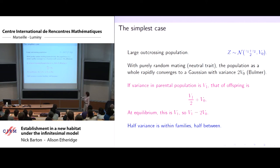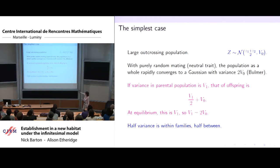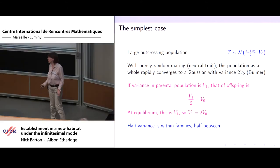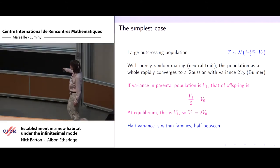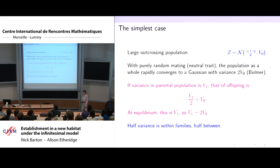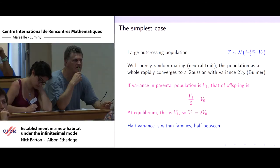You immediately see something interesting and perhaps surprising: across that population, half of the variance we're observing is actually within families, and half is between families. In general, what we'll call the infinitesimal model only says that the genetic components within families are normally distributed — it doesn't say anything about the distribution of the trait value across the whole population. The distribution across the whole population may be very far from normal, and we'll see why that might be.